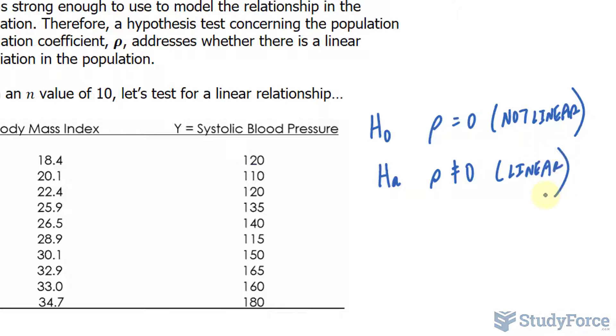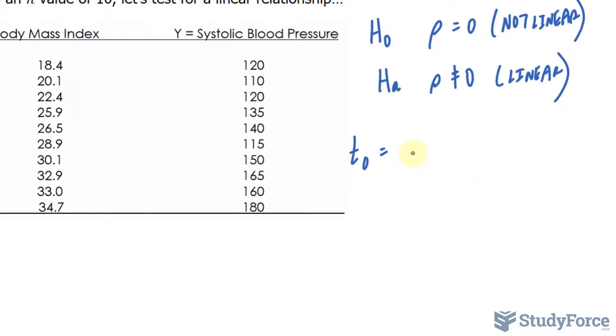Next, we choose our test statistic, and for that we will be using t observed. You calculate t observed by taking the value of R, multiplying it to the square root of N minus 2 over 1 minus R squared. Let's substitute the values that we know. R is 0.8599 times the square root of 10 minus 2, that happens to be 8, over 1 minus 0.8599 squared.